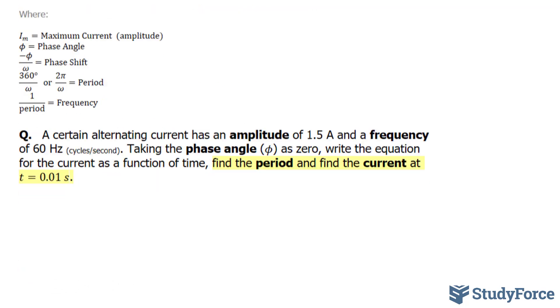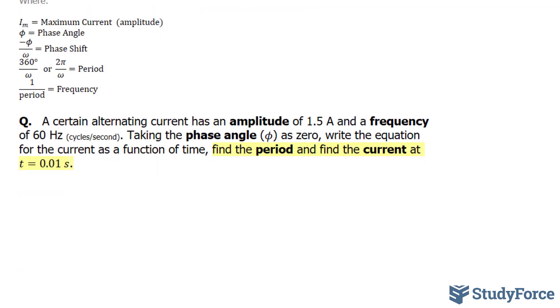The question reads: A certain alternating current has an amplitude of 1.5 amps and a frequency of 60 hertz. Taking the phase angle as zero, write the equation for the current as a function of time. Find the period and find the current at t is equal to 0.01 seconds.